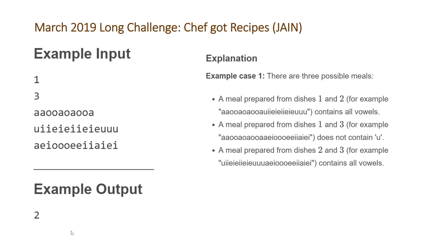Looking at the explanation CodeChef provided, there are three possible meals. Combining dishes 1 and 2 gives a string that contains all vowels — A, O, U, I, and E — so the chef likes it. Combining dishes 1 and 3 fails because it doesn't contain the vowel U. For the last combination of dishes 2 and 3, we do get all vowels — U, I, E, A, and O — so that also works.